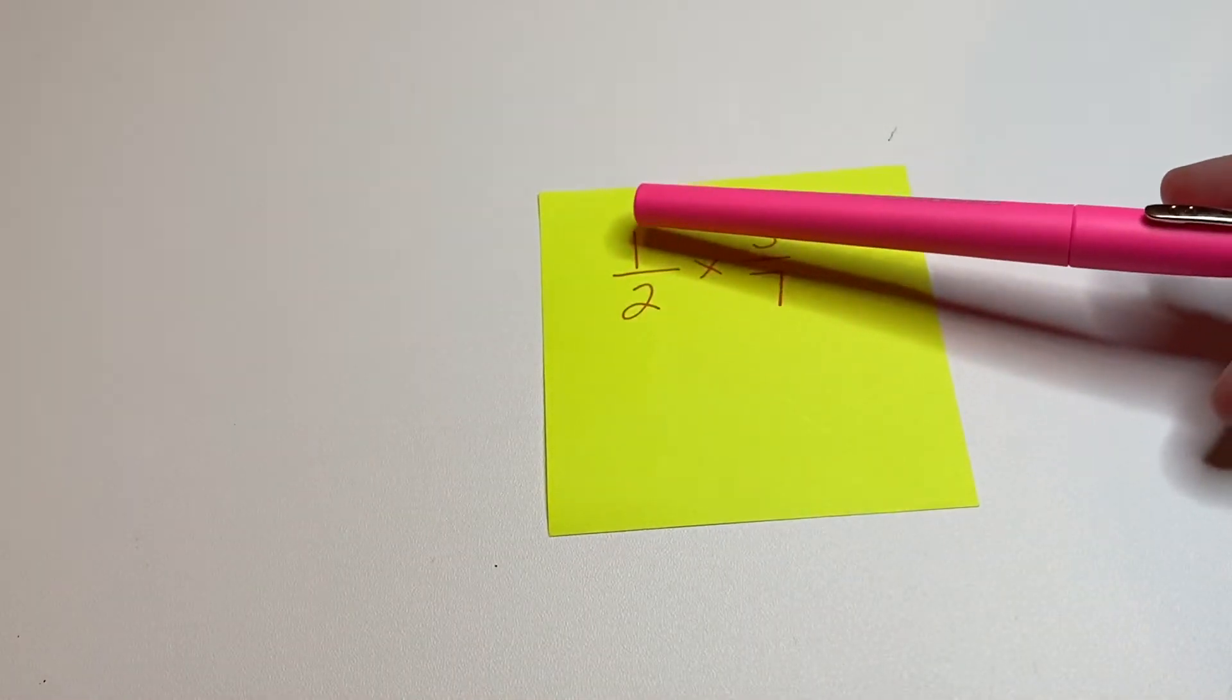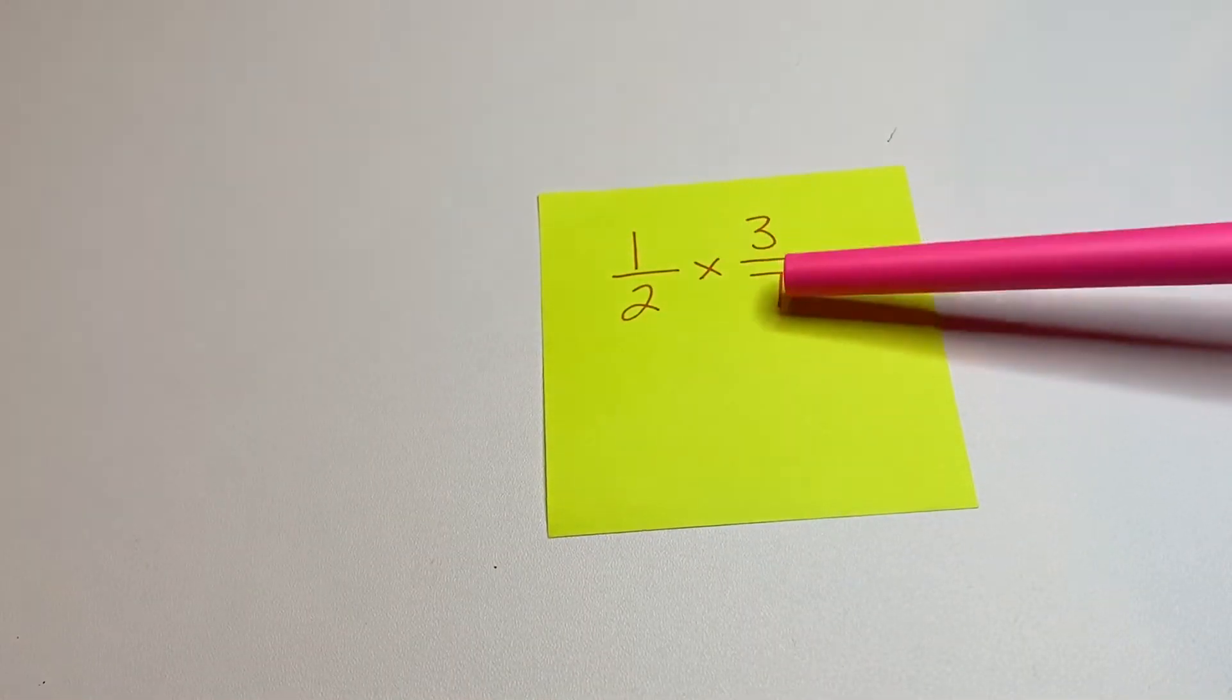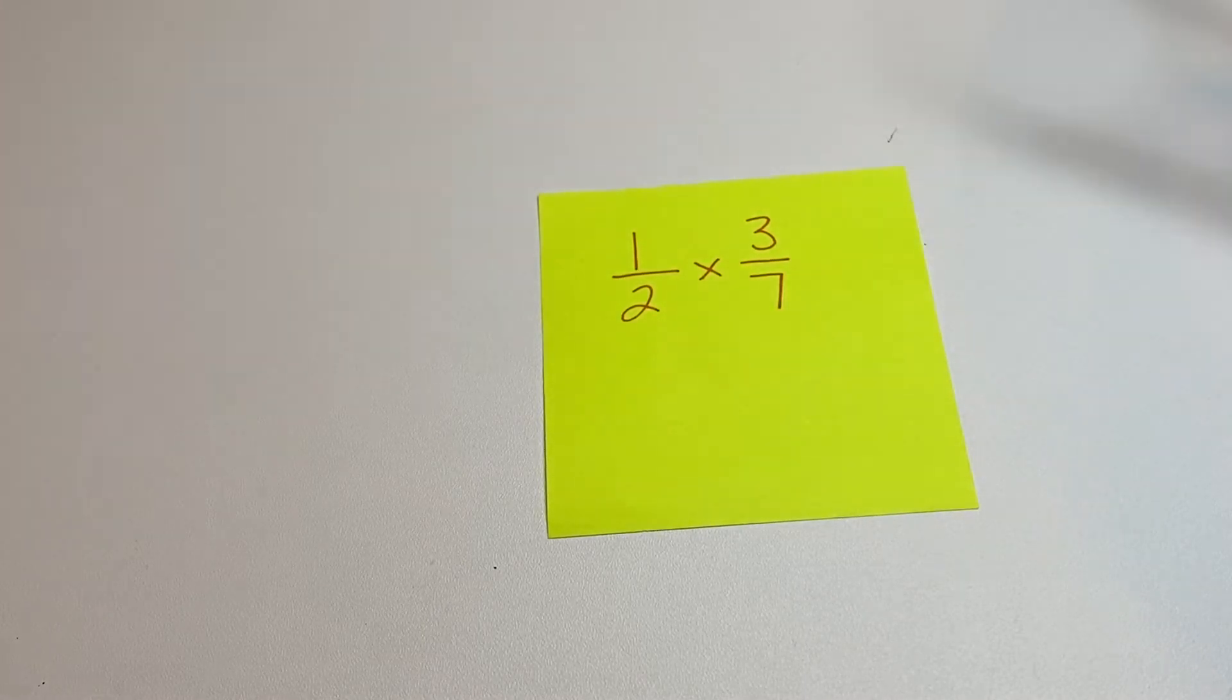So if we're multiplying a fraction, here's an example. If we're multiplying a fraction, we're going to multiply the numerator times the numerator and the denominator times the denominator.